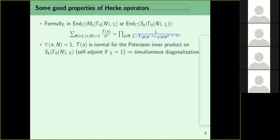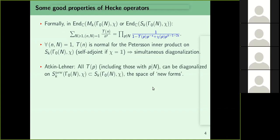If small n is relatively prime to capital N, one can show that the Hecke operator T(n) is normal for the Petersson inner product. Once you have a normal operator you can diagonalize. So for n relatively prime to the level, the Hecke operators form a commuting family that is normal and can be simultaneously diagonalized to obtain eigenvalues — and that is the hope for getting L-functions.